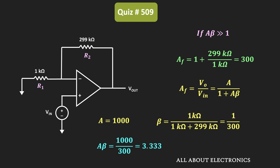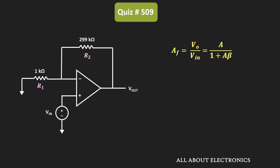As you can see, the value of Aβ is not very large. Therefore, the closed-loop gain of the op-amp must be given as A divided by 1 plus Aβ. Putting in the values of A and β, this closed-loop gain is approximately equal to 230.7.